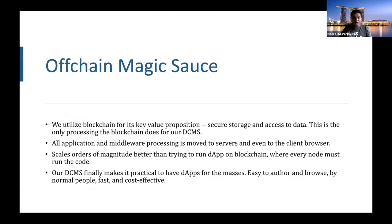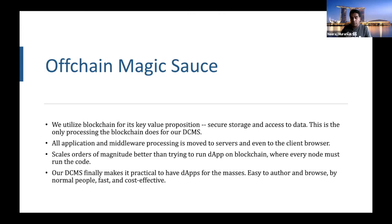Now the off-chain magic sauce. We're using the blockchain for its key value proposition, which is storing data. We want to make sure we're using the blockchain only for what it excels at, and to me that's really about data storage — not about executing logic. Because a lot of stuff, especially a CMS, you don't need to run everything on the blockchain like on Ethereum, where every node runs dApps. So all the application middleware processing is moved from the nodes to the servers or even to your browser — a lot of stuff is now running in your browser in JavaScript. There are orders of magnitude of improvement in terms of scale so dApps can run on the blockchain without every node running the code. Our DCMS makes it practical for dApps to run everywhere, without the scaling issues that have been plaguing Ethereum. It's easy to author, browse, and for normal people to access.